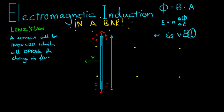So the longer the bar, the more EMF you'll get. The stronger the magnetic field, the more EMF you'll get. And the faster you move that bar, the faster the charges are moving through the magnetic field, the more force they experience.